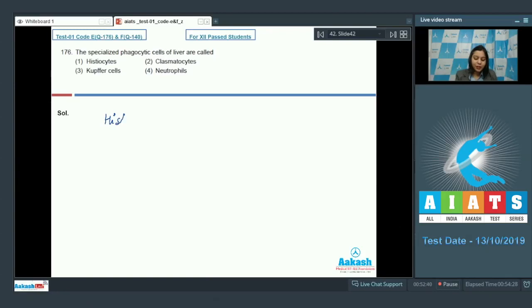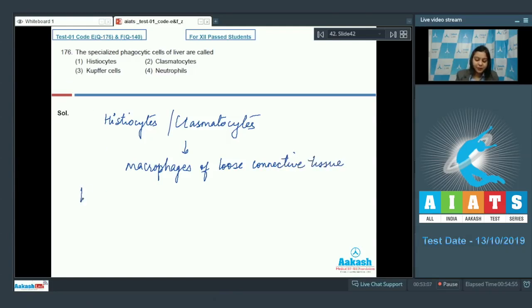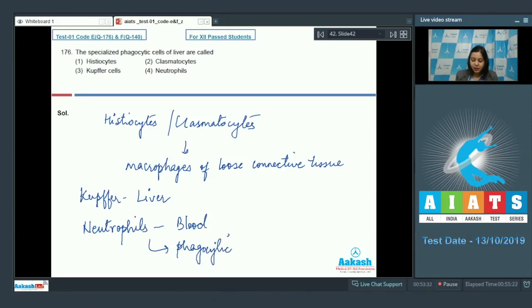Here histiocytes and clasmatocytes are macrophages of loose connective tissue. Kupffer cells are specifically found in liver and neutrophils are present in blood. They also have phagocytic activity.